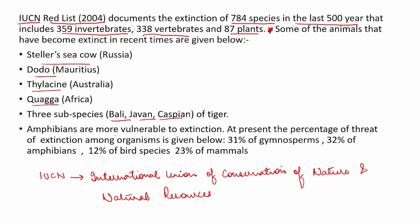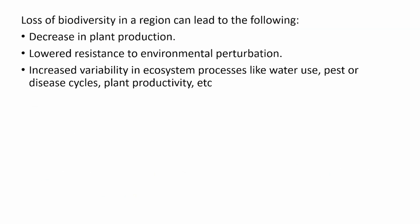Amphibians are recognized as more vulnerable for extinction. At present, the percentage threat of extinction among organisms is: 31% of gymnosperms, 32% of amphibians, 12% of bird species, and 23% of mammals. This is the record listed by the International Union of Conservation of Nature and Natural Resources.